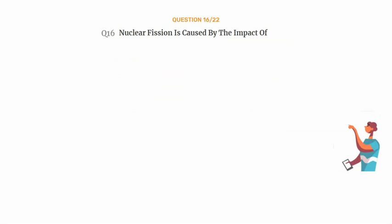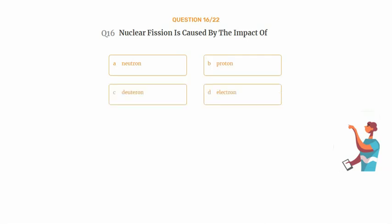Question number 16. Nuclear fission is caused by the impact of. Option A: Neutron. Option B: Proton. Option C: Deuteron. Option D: Electron.